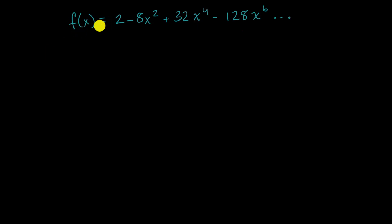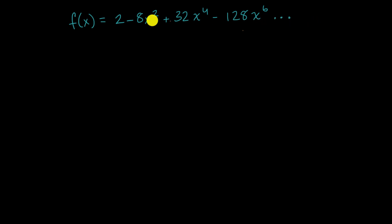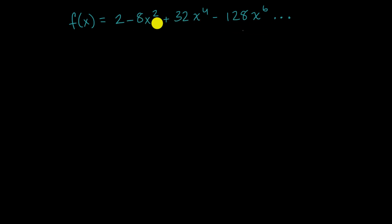We have this function equal to two minus eight x squared plus 32 x to the fourth minus 128 x to the sixth, and it just keeps going and going — it's defined as an infinite series. What I want to explore in this video is whether there's another way to write this function so it's not expressed as an infinite series.